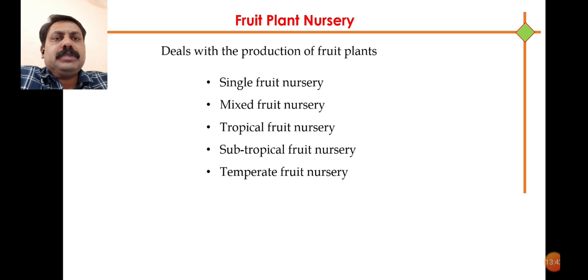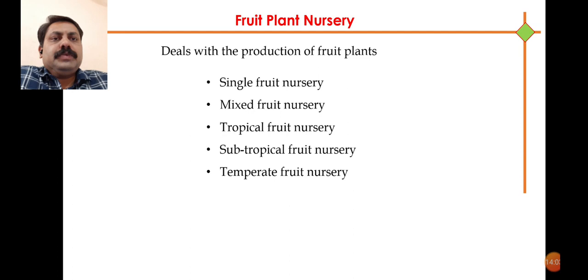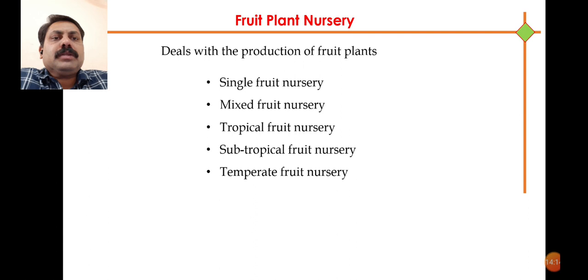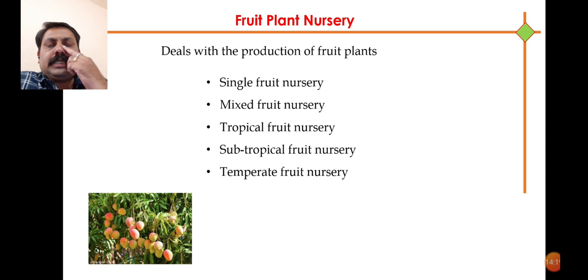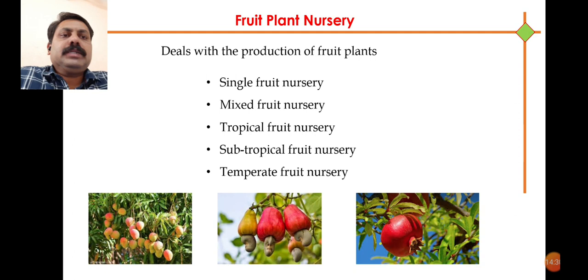We can also go for a mixed fruit nursery where multiple fruits can be raised. In Konkan, we can establish a nursery for Alphonso as well as cashew. In our area, we can establish a nursery for grapes as well as pomegranates. Some species are tropical, and since India is a tropical country, a number of fruit plants can be established here. So tropical, subtropical, or temperate fruit nurseries may be established. The fruit plant nursery can be set up as per the requirement of farmers or the need of the local area.